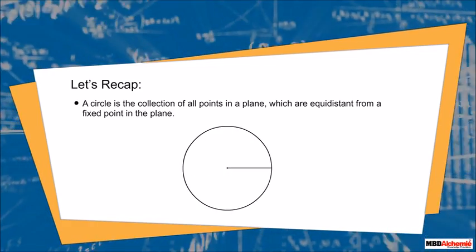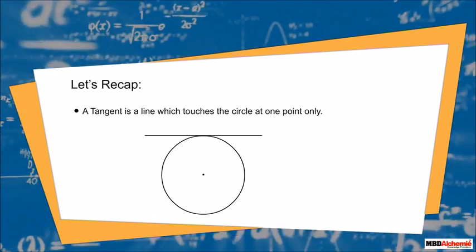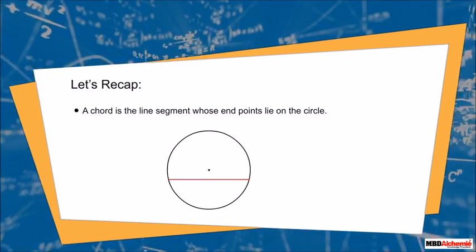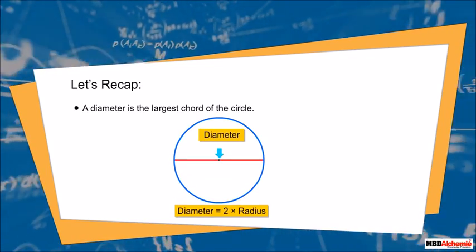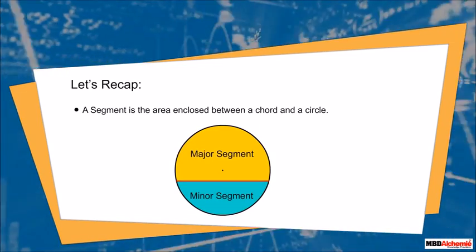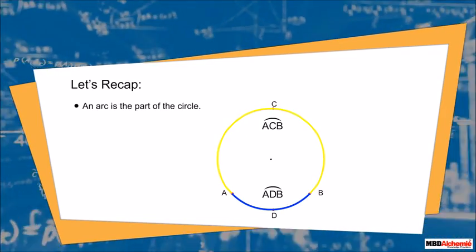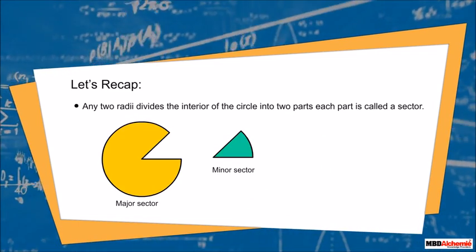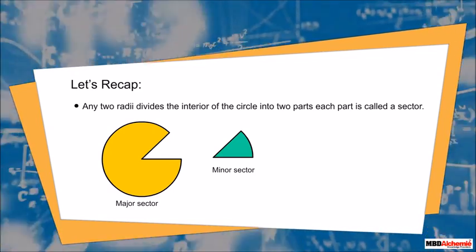Let's recap: A circle is the collection of all points in a plane which are equidistant from a fixed point. A tangent is a line which touches the circle at one point only. A chord is a line segment whose end points lie on the circle. A diameter is the largest chord of the circle. A segment is the area enclosed between a chord and a circle. An arc is part of the circle. Any two radii divide the interior of the circle into two parts, and each part is called a sector.